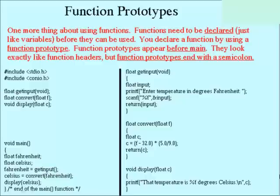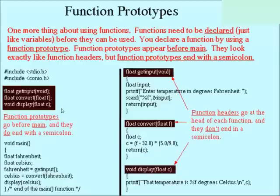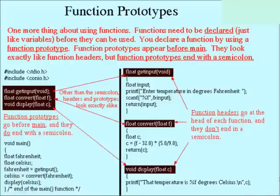Just as we had to declare variables before using them, we also have to declare functions before we use them, and we do that using a function prototype. Function prototypes always appear before main. The cool thing about a function prototype is that once you've written the function header, it's exactly the same as the prototype — the only difference is the prototype ends in a semicolon. So just copy the function header, paste it before main, and add a semicolon. Headers don't end in a semicolon because a semicolon marks the end of something, and the header is the beginning of the function, not the end.